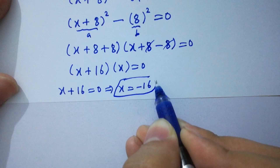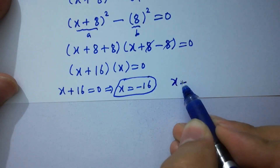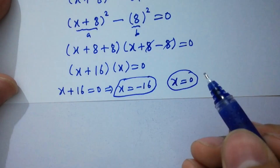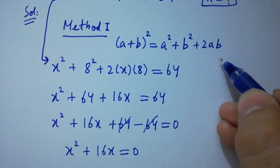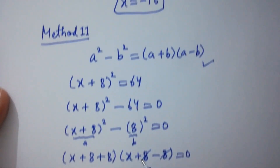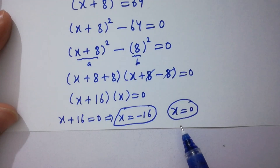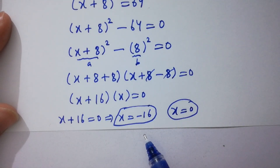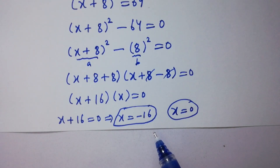By Method 1 we get x = 0 and x = −16, and by Method 2 we also get x = 0 and x = −16. Both values are the same.